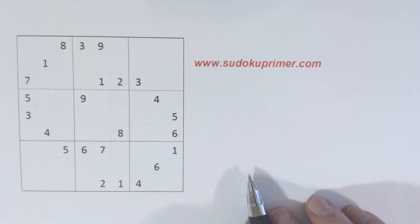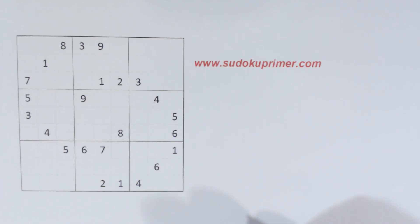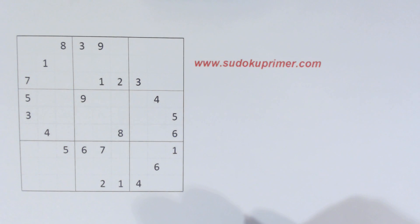This technique we're going to use is trial and error, and it's when you get stuck on a difficult puzzle and can't progress. When you're in that situation, let's say you find a place where a 1 will fit in one of two cells in a box. With trial and error, what you do is randomly choose one of those two cells, put the number in it, and then continue solving the puzzle as if that's the correct location.